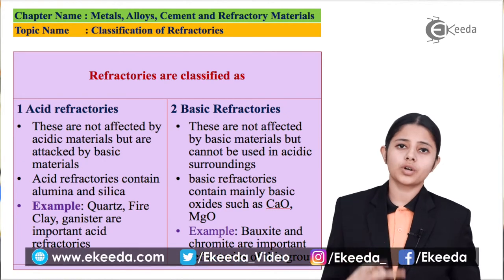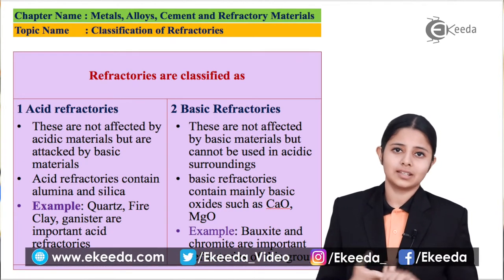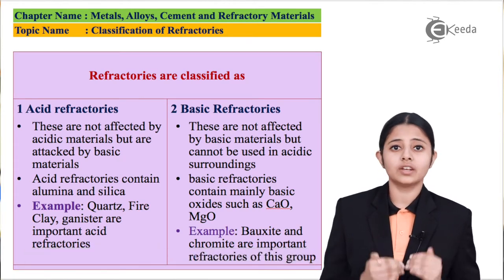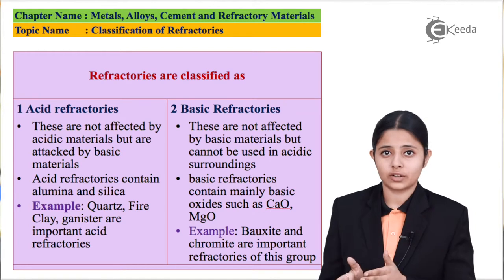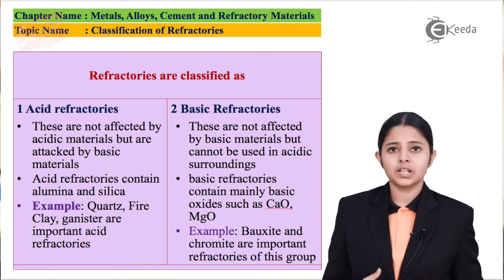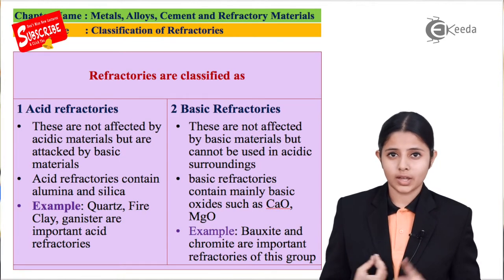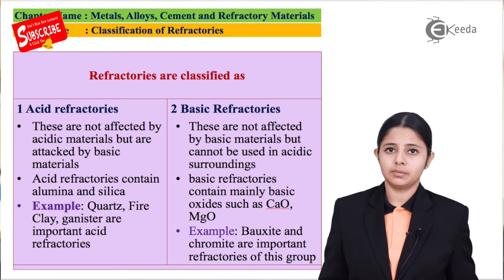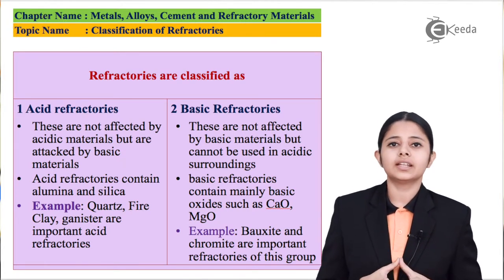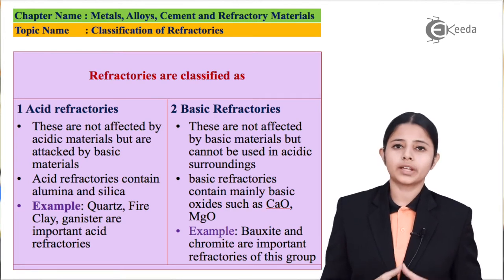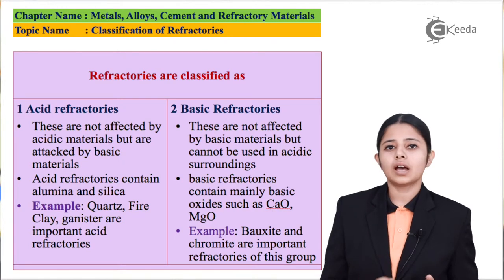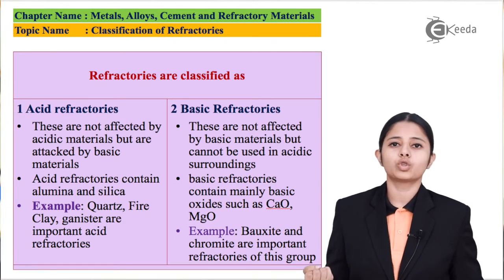The two most important components of acidic refractories are alumina and silica. Refractories which contain both of these are classified as acid refractories. The most common examples of acidic refractories are fire clay and quartz. Both can be used to line blast furnaces where reactions produce a lot of acid, and they will not react to it, ensuring that the acid reactions are contained and metals are extracted in the most pure form.